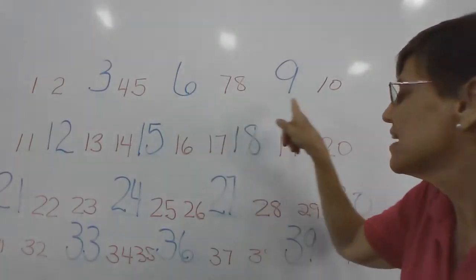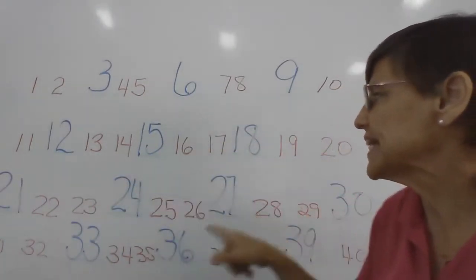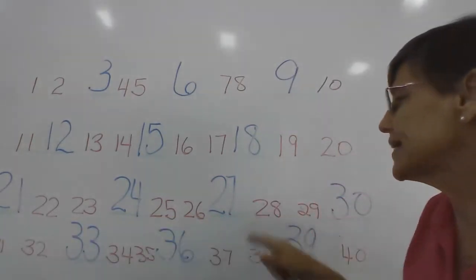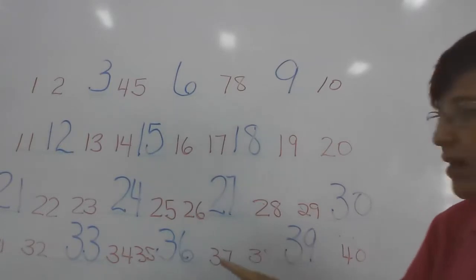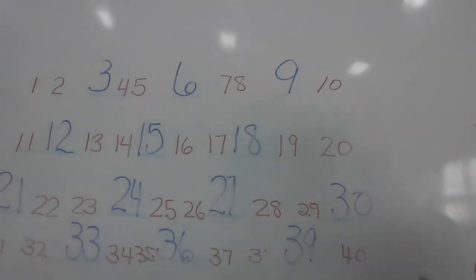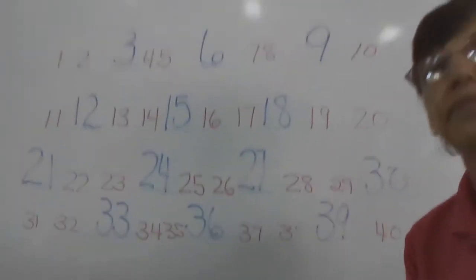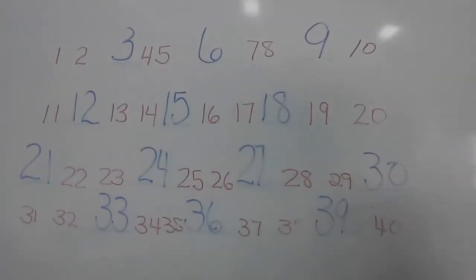Three, six, nine, twelve, fifteen, eighteen, twenty-one, twenty-four, twenty-seven, thirty, thirty-three, thirty-six, thirty-nine. Okay, let's try it one more time. Three, six, nine, twelve, fifteen, eighteen, twenty-one, twenty-four, twenty-seven, thirty, thirty-three, thirty-six, thirty-nine. One more time. Three, six, nine, twelve, fifteen, eighteen, twenty-one, twenty-four, twenty-seven, thirty, thirty-three, thirty-six, thirty-nine.